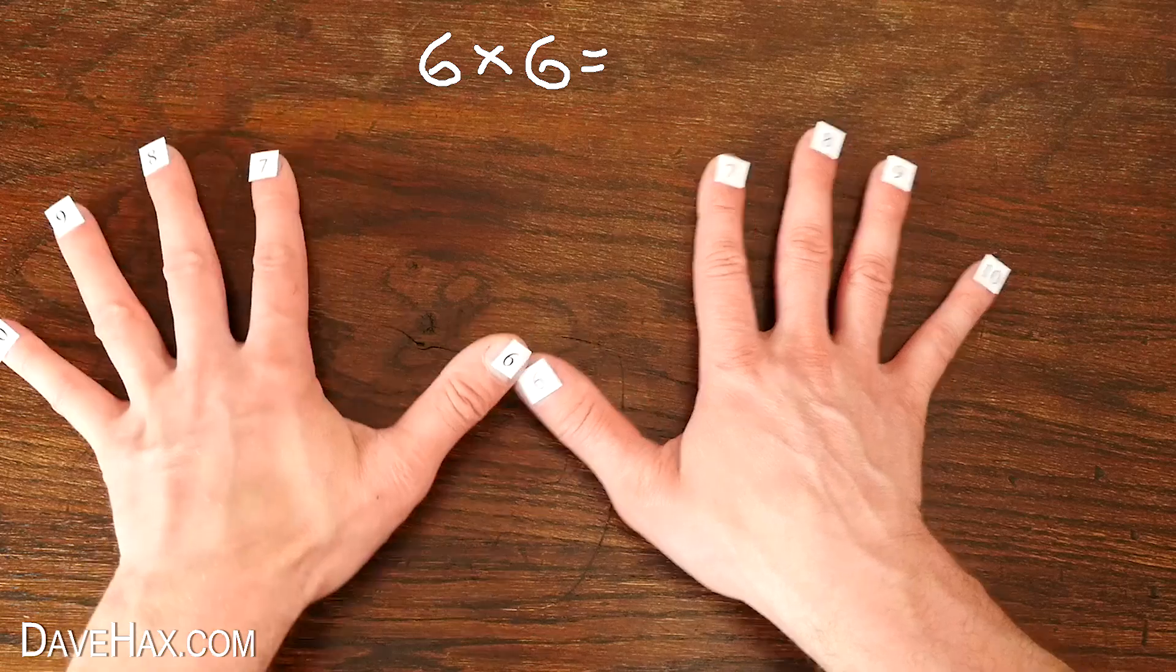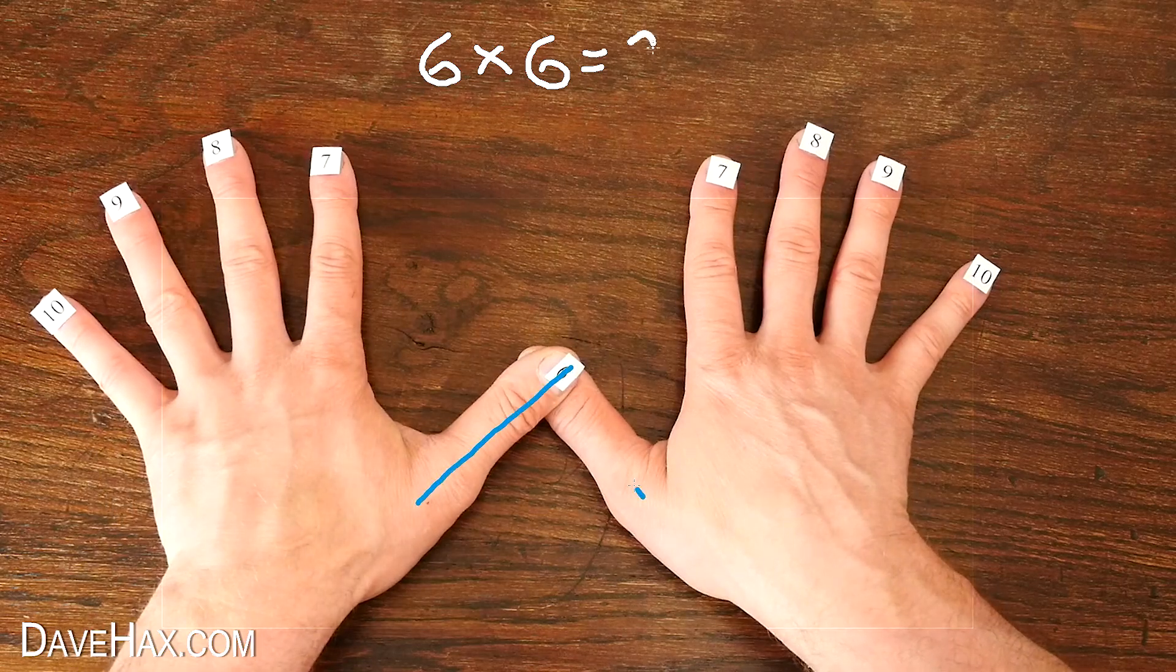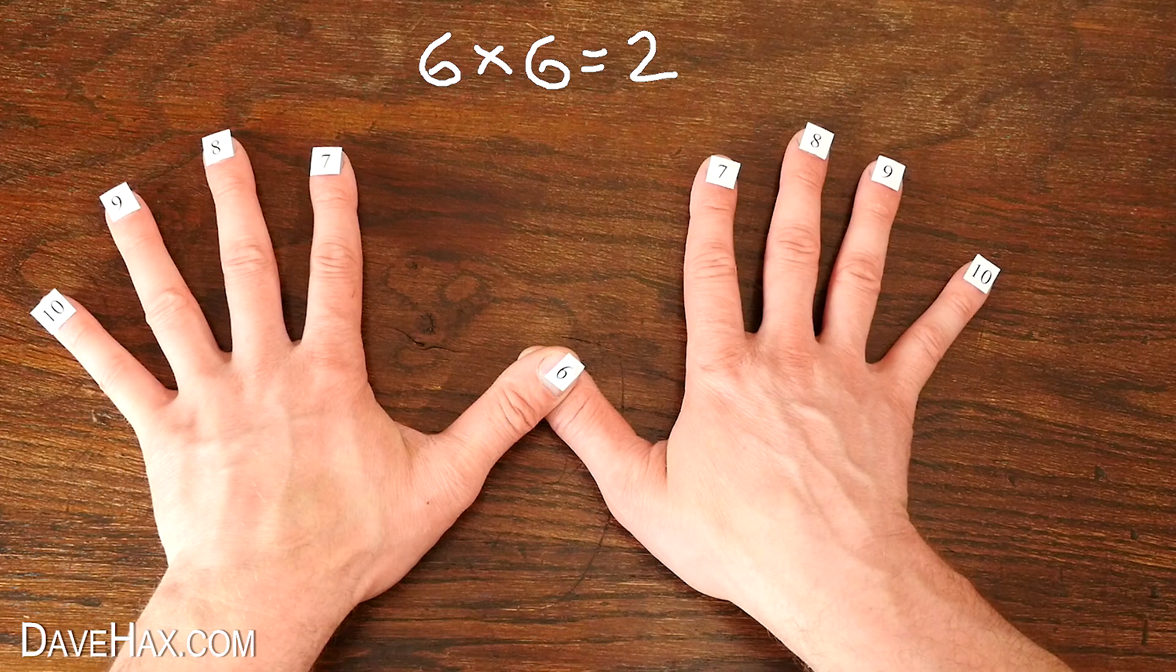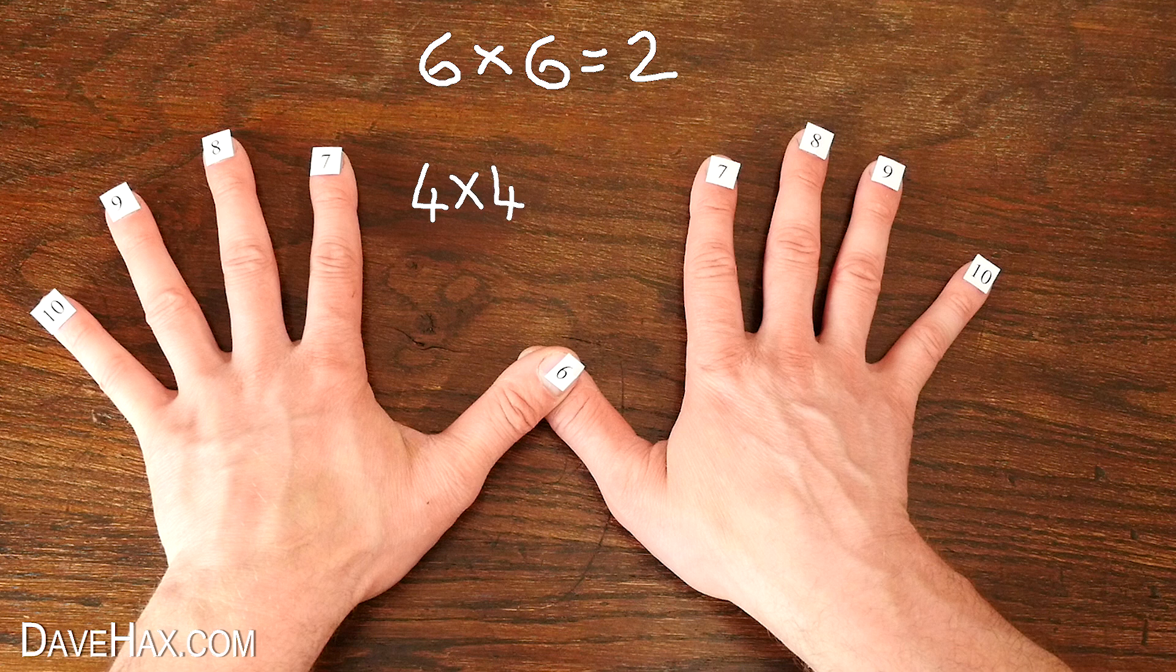6 times 6 is interesting. We have the first digit of 2, and the second digit is 4 times 4, which is 16. So we have to carry the 1 over the 2, and add them together to make 3, giving us a final answer of 36.